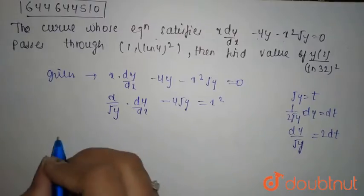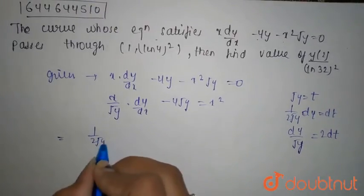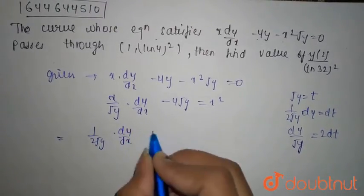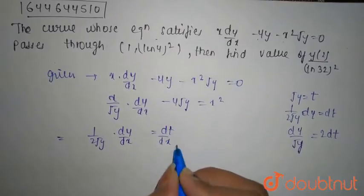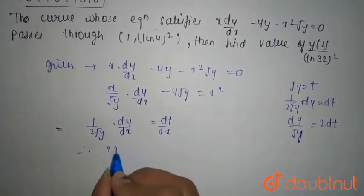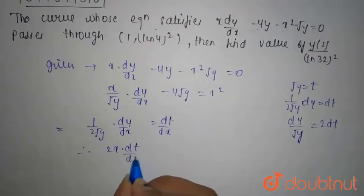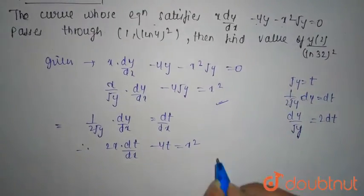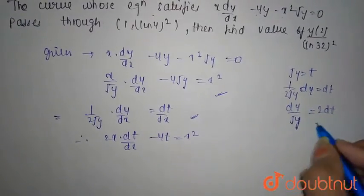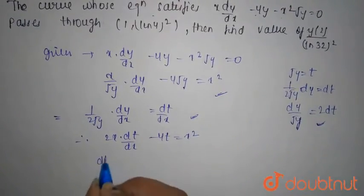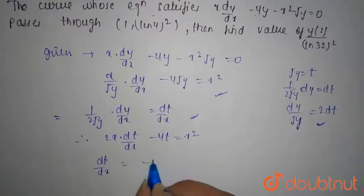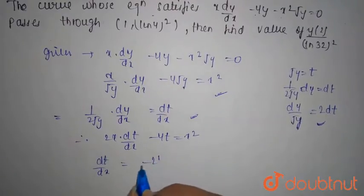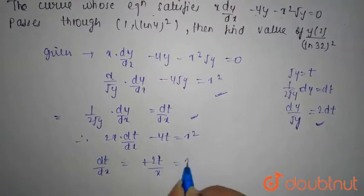Using that and putting here, you have 1/(2 root y) dy/dx equals dt/dx. Therefore, 2x dt/dx minus 4 root y equals x². You will have dt/dx plus 2t/x equals x/2.